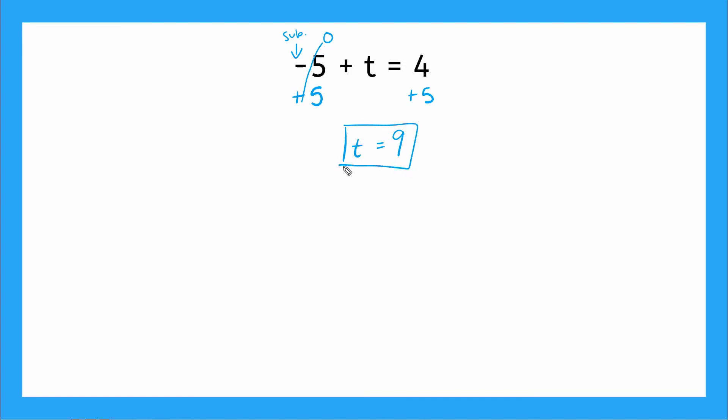All right, let's double check our answer. So we had negative 5 plus t is equal to 4, substitute negative 5 plus 9 is equal to 4. That'll give me 4 equals 4. Checks out. We did it right.